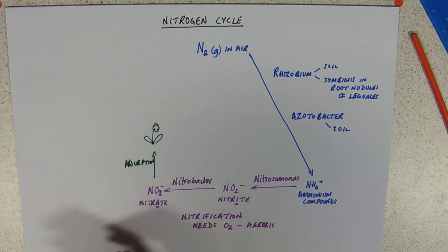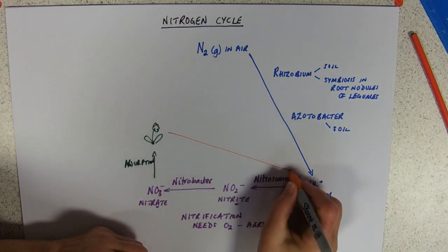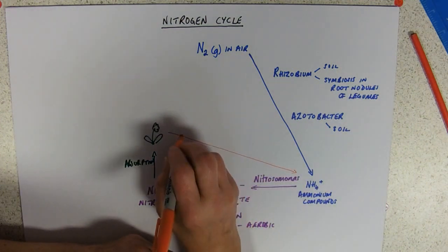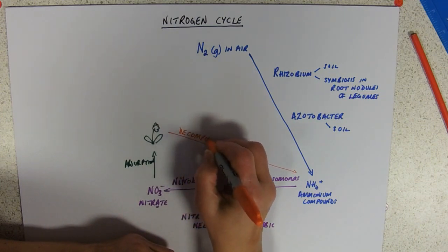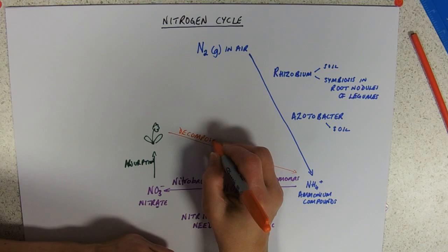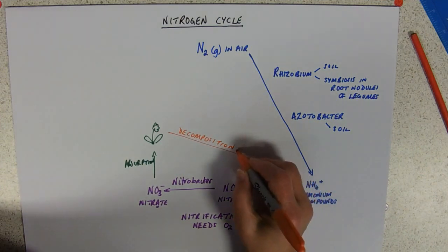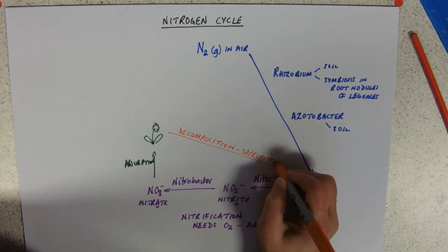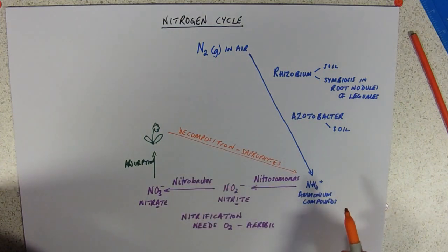Our decay organisms, our saprophytes, are going to release ammonia, which is going to be converted into ammonium compounds. So this represents decomposition. And that's going to release. These are saprophytes. We're talking bacteria. We're talking fungi. And they're sort of doing deamination. They're using the keto acid for their own respiration. And they're releasing the ammonia into the atmosphere.